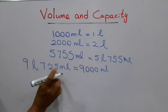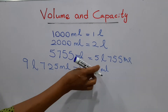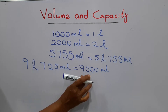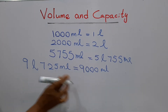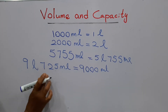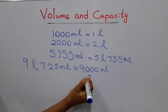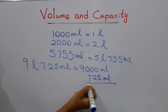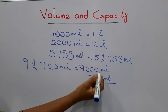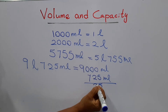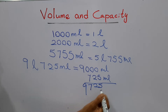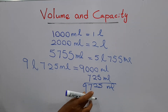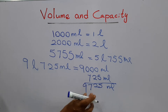When you are adding two numbers together, you must write in proper places — the ones place, tens place, hundreds place, and the thousands place. Seven hundred and twenty-five must be written under the hundreds, tens, and ones places. This is very important when adding numbers. The answer is nine thousand seven hundred and twenty-five milliliters in total.